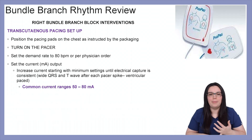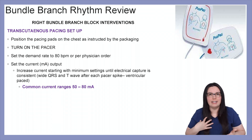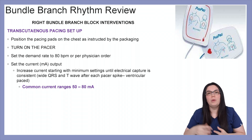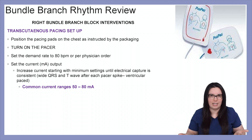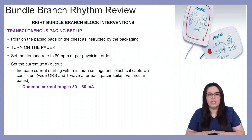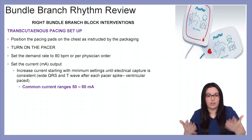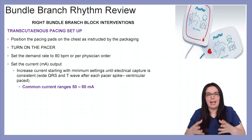So how do we set up transcutaneous pacing? We position the pacing pads on the patient as instructed by the packaging — normally one pad goes over the right anterior chest wall and the left pad goes on the left mid-axillary line next to the heart. Turn on the pacer first, then set the demand rate to 80 beats per minute or whatever the physician orders. Set the current mA output by starting at the minimum and increasing until electrical capture is consistent, shown by a wide QRS and a T wave after each pacer spike. Common current range is between 50 to 80 mAs.